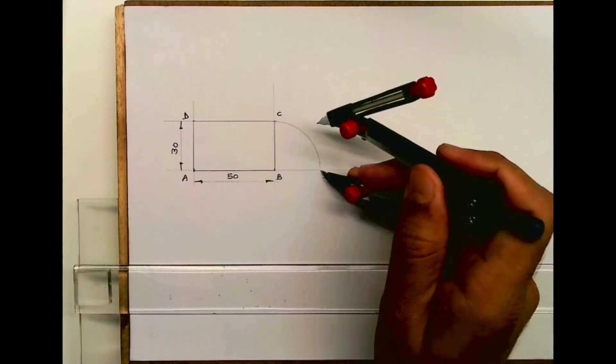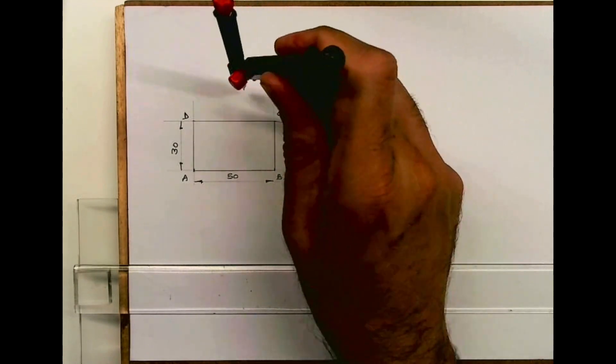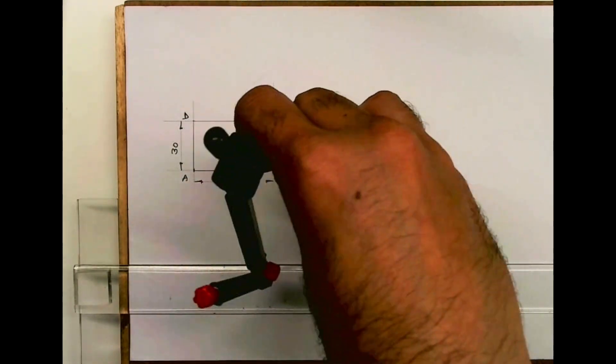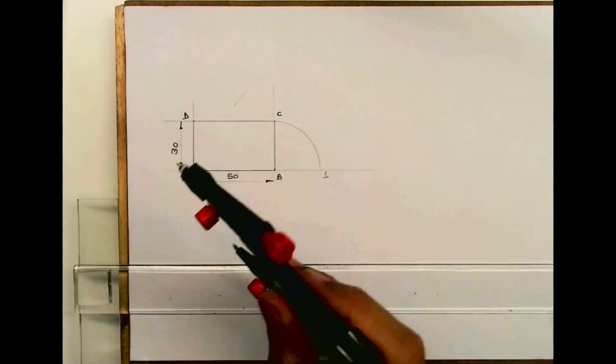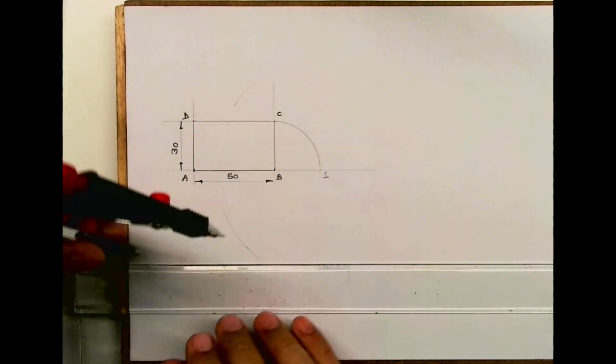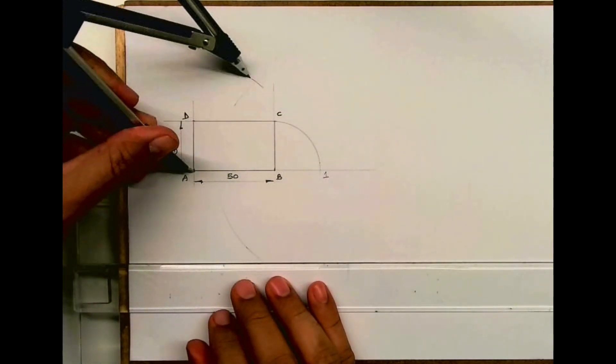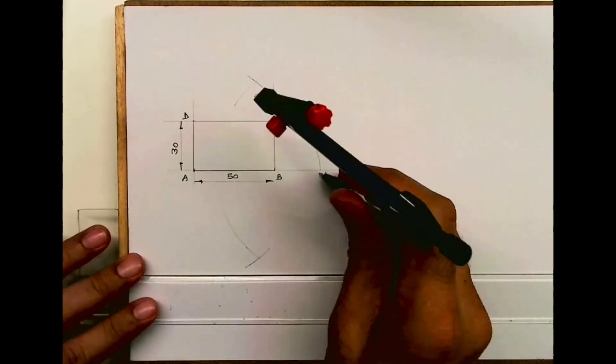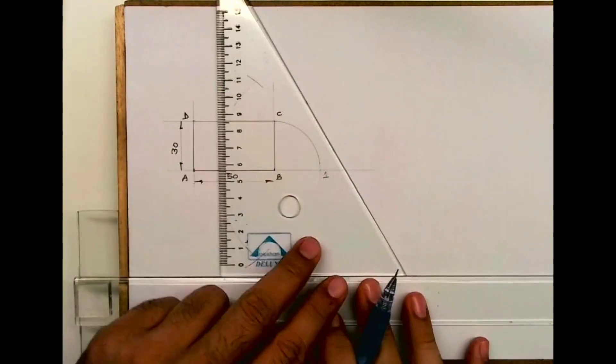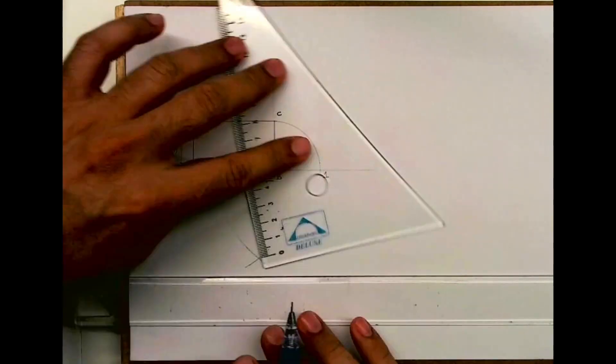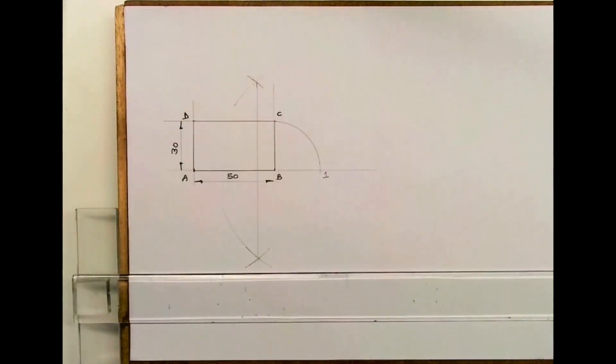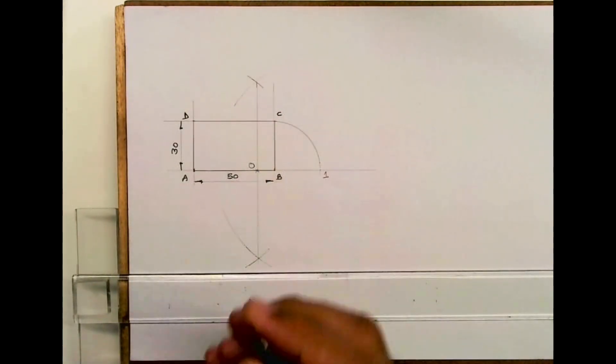Then you bisect line A1, which is approximately 80, 50 plus 30. After bisection you'll get point O.